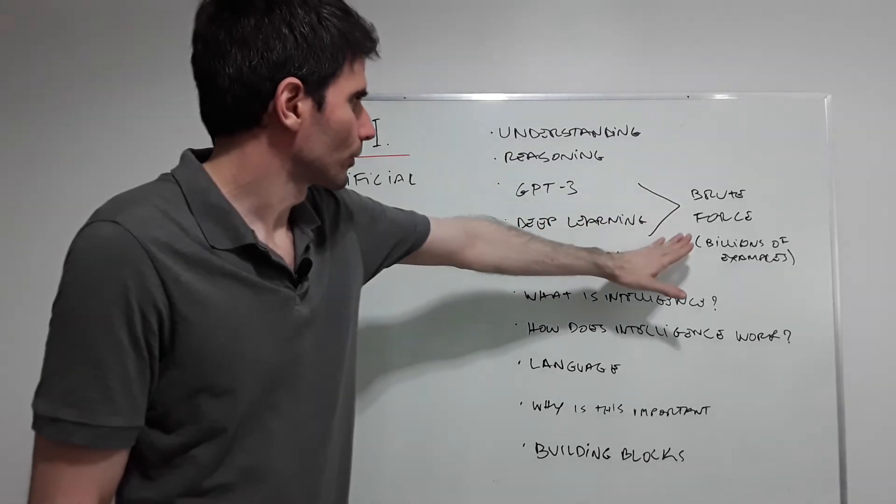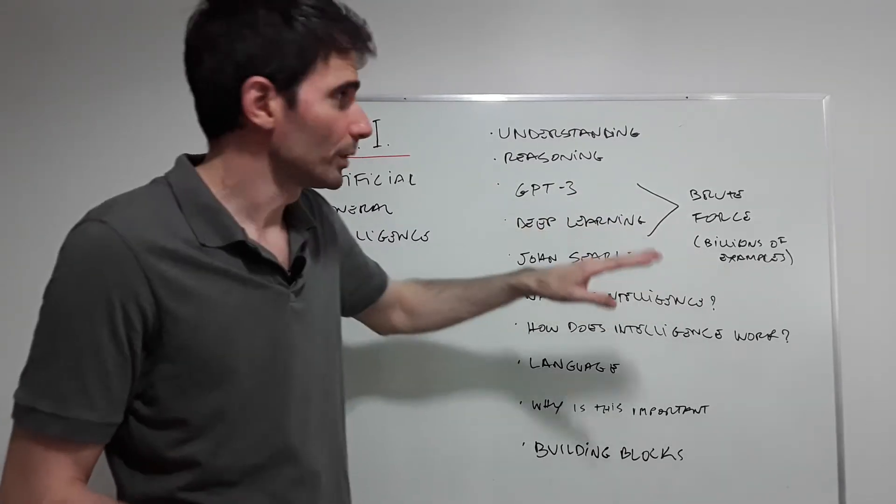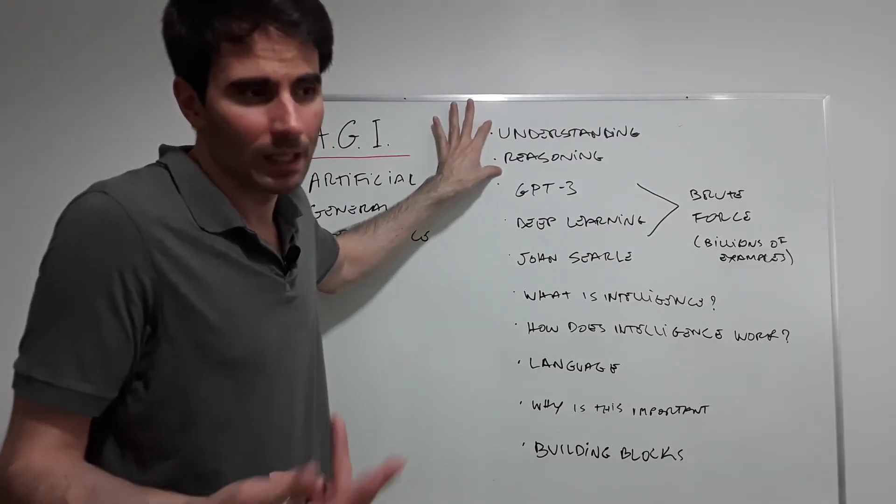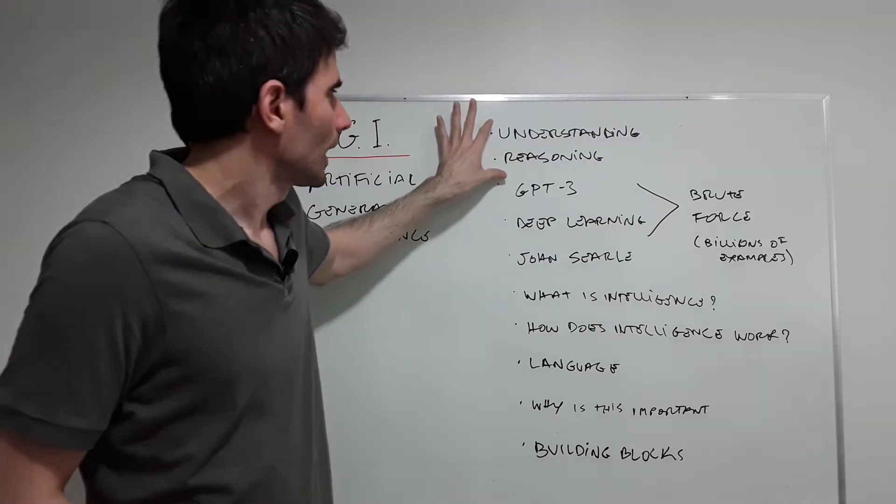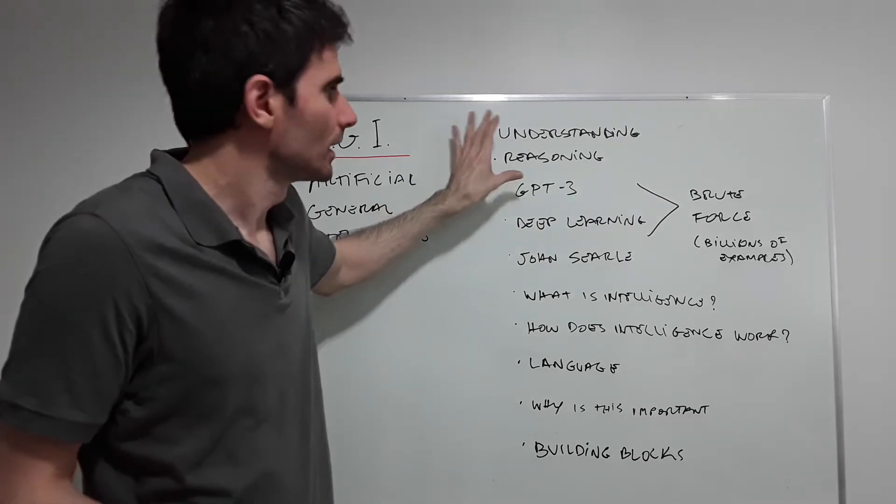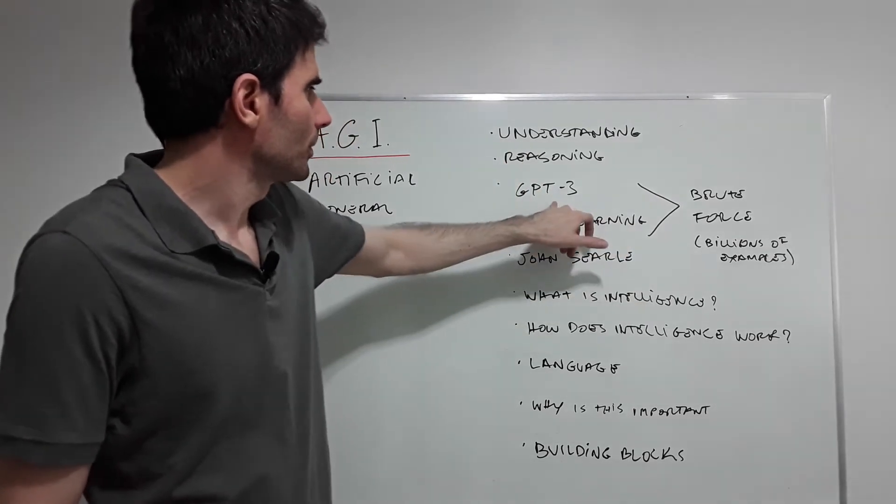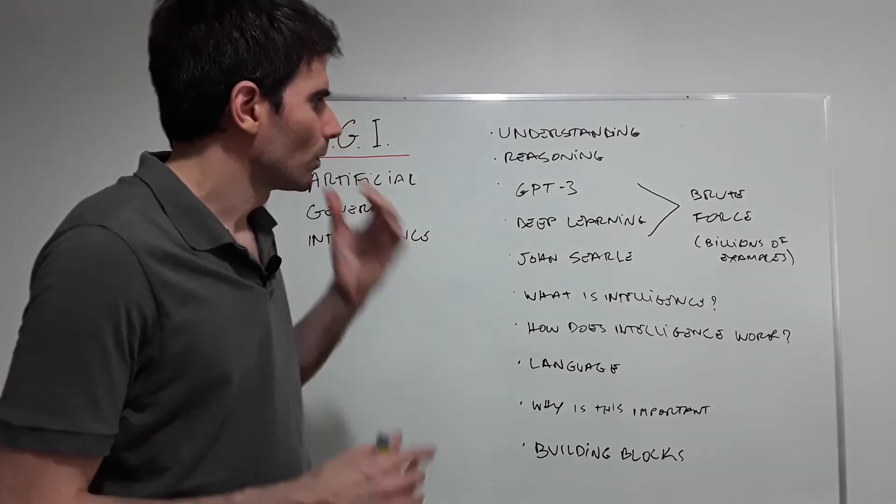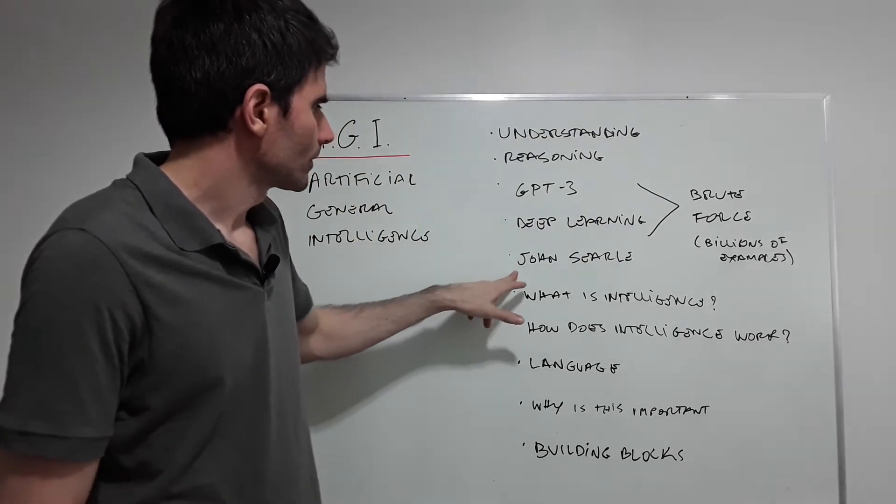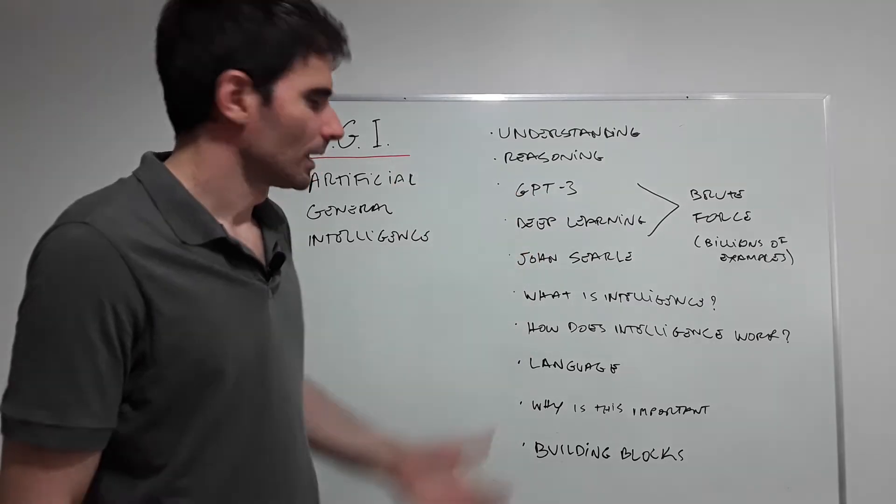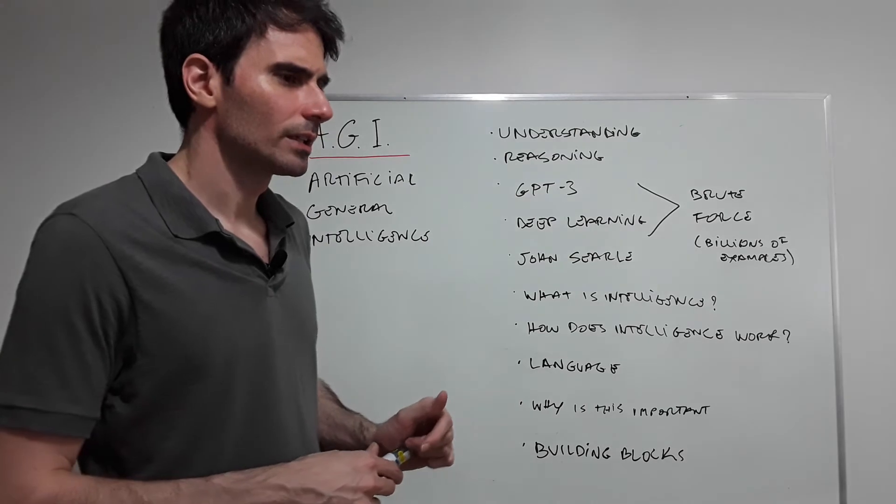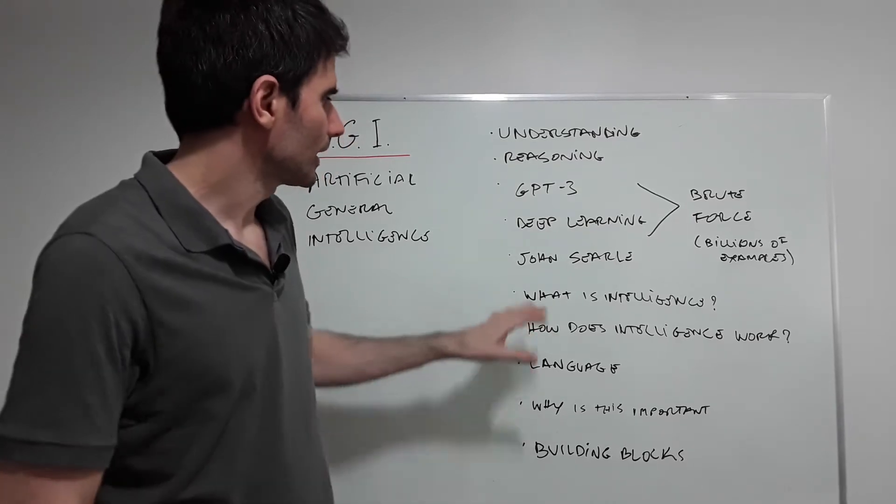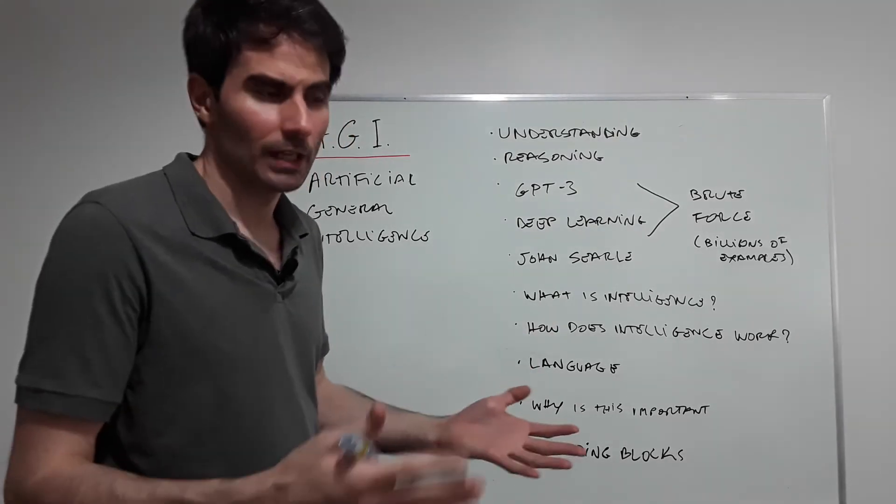This is like brute force and billions of examples which humans don't need. Toddlers, children, adults often need one example or two or three and they get it. GPT-3 has 175 billion parameters. John Searle, a philosopher who gave a talk at Google, said deep learning systems don't reason, they have no semantics, only syntax.